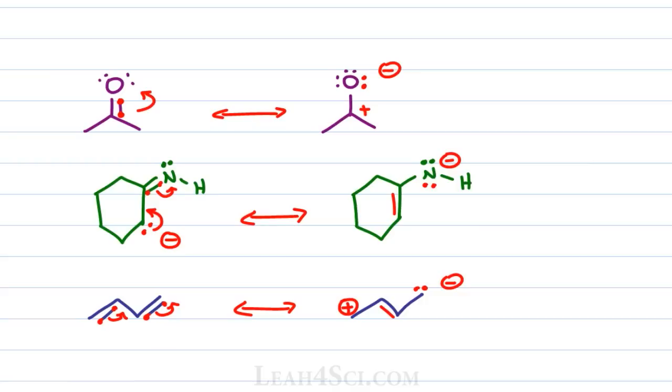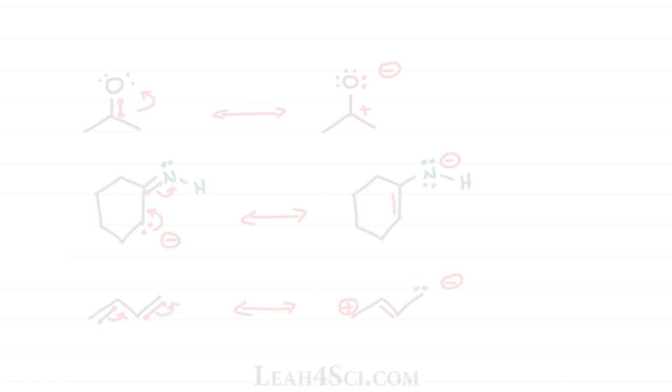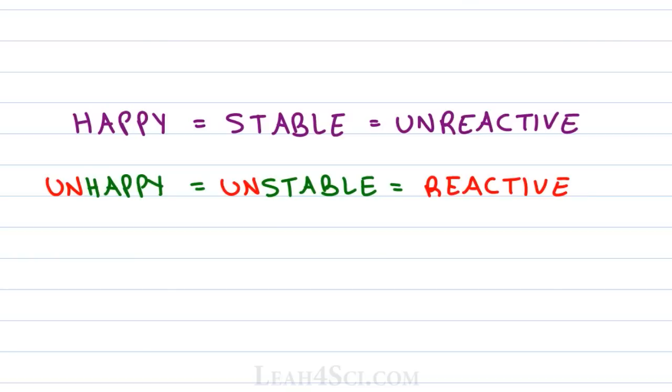And the answer is not to memorize rules, instead the answer is to understand the stability of each contributing structure. In organic chemistry and in life, it's important to recognize this key principle: if a molecule is happy, meaning it's stable, it's going to be unreactive. If it's comfortable with where it is, it has no desire to change its situation.